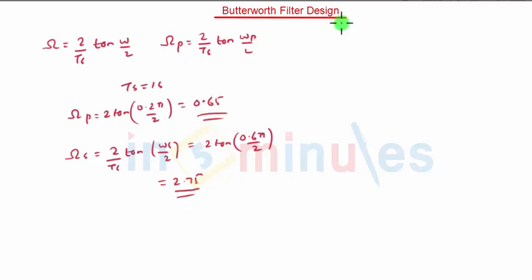Now the given specifications of analog filter becomes AP is equal to 0.8, omega P is equal to 0.65, omega S is equal to 2.75 and AS is equal to 0.2.